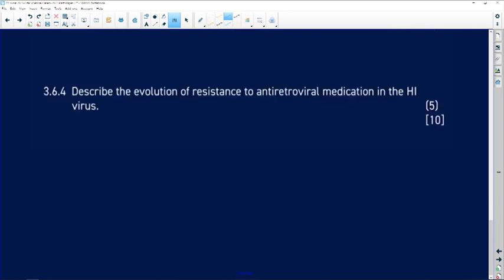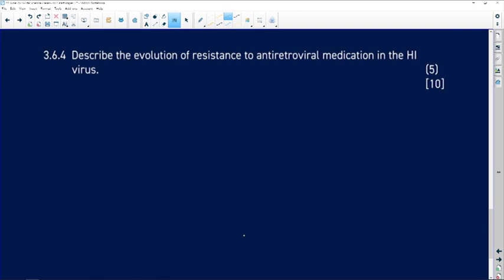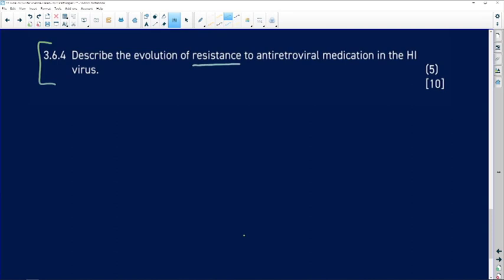And our very last question says, describe the evolution of resistance to antiretroviral medication in the HIV virus. What we're doing here, you will have done in class, looking at examples like resistance to insecticides with mosquitoes. You would have done this with examples of antibiotic resistance. Those are the examples of resistance building up or evolution of resistance in the textbook and in the syllabus. Now, what you have to do is apply your knowledge of resistance to the situation of antiretroviral medication. So, this is an application kind of question.